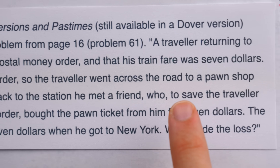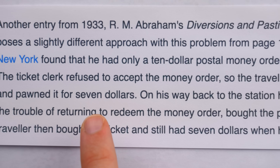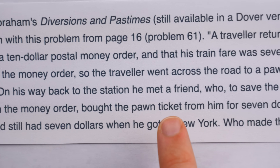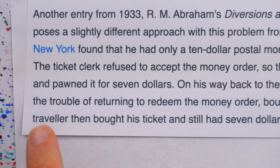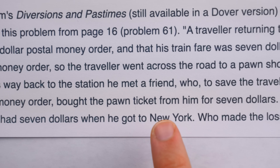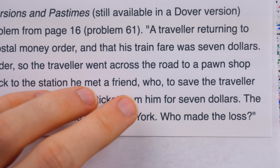On his way back to the station, he met a friend, who, to save the traveler the trouble of returning to redeem the money order, bought the pawn ticket from him for $7. The traveler then bought his ticket, and still had $7 when he got to New York. Who made the loss?